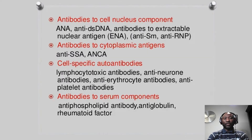As mentioned earlier, these antibodies can be directed against cell nuclear components. Examples include antibodies against double-stranded DNA, which is found in people with lupus. Some are also referred to as extractable nuclear antigens — ENA for short — where we have antibodies to anti-Smith, which is also found in lupus, or antibodies to ribonuclear particles, which are anti-RNP antibodies that can be found in lupus as well and other conditions such as systemic sclerosis.